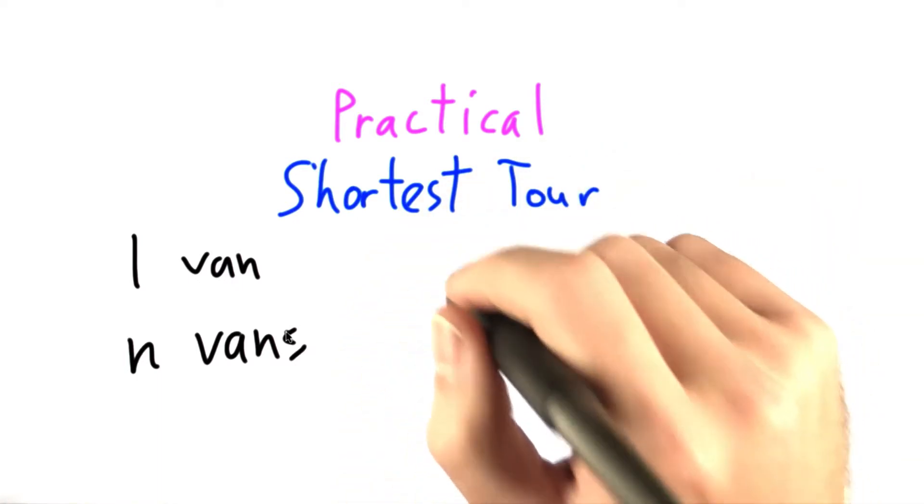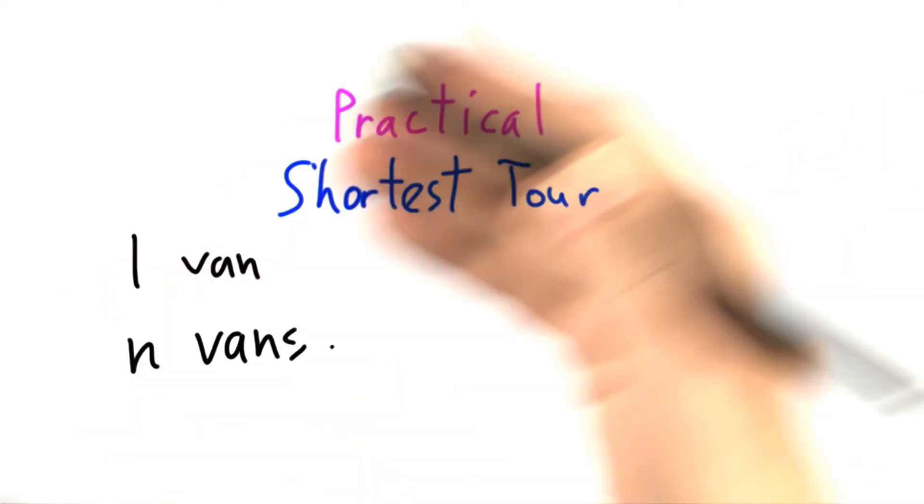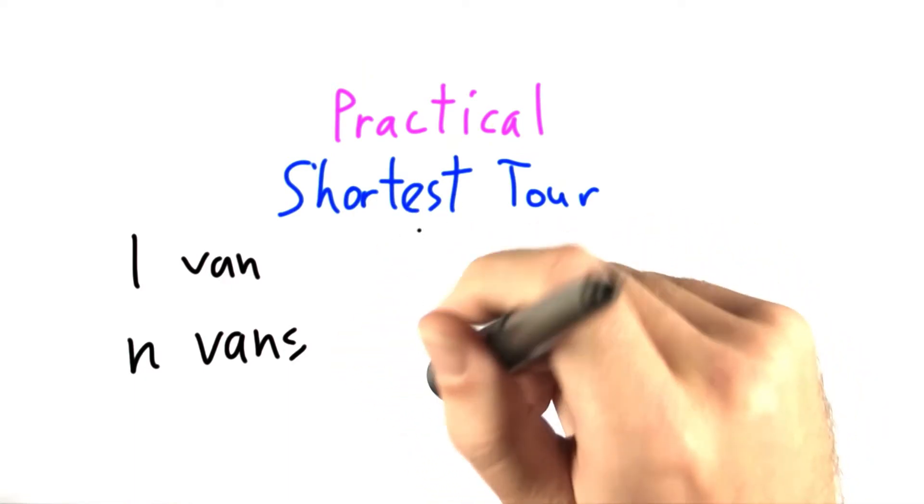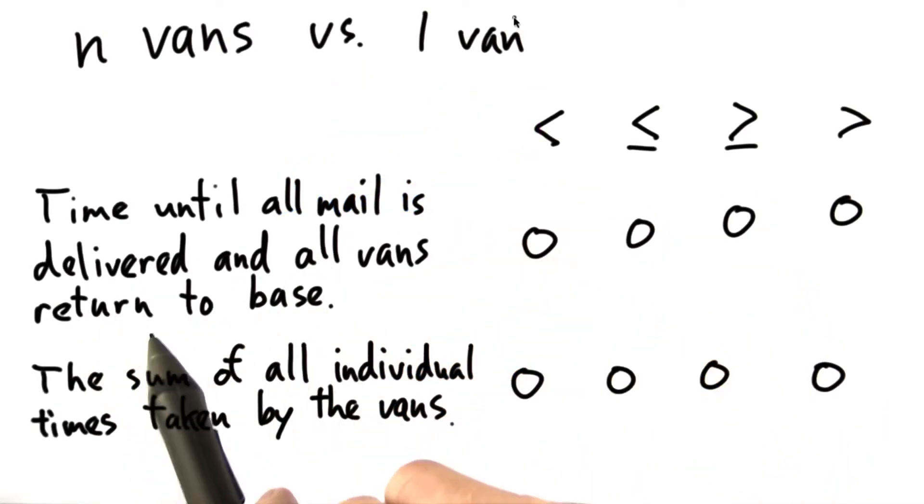Now, if all the vans start at the same time, how does this end up changing the behavior of the problem and the complexity of the problem? Let's take a look at two different questions.